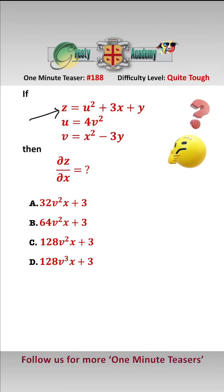So we need to be a bit careful here because we have z which is a function of u, x and y. u is a function of v and v is a function of x and y. We could use substitution but I prefer to use implicit differentiation.